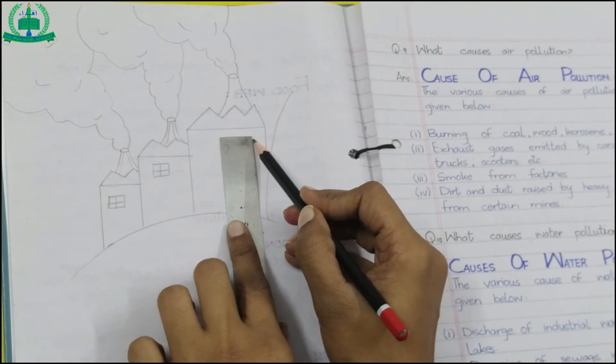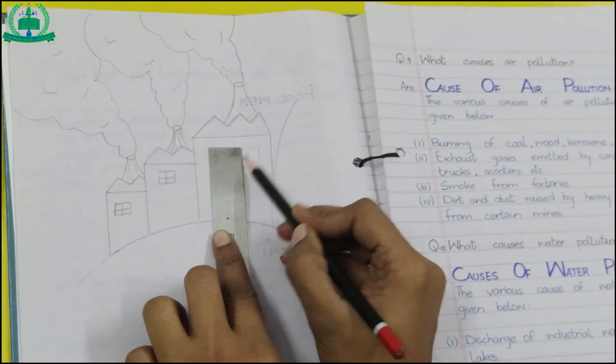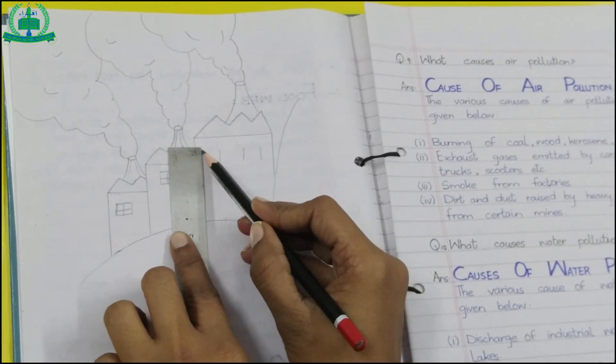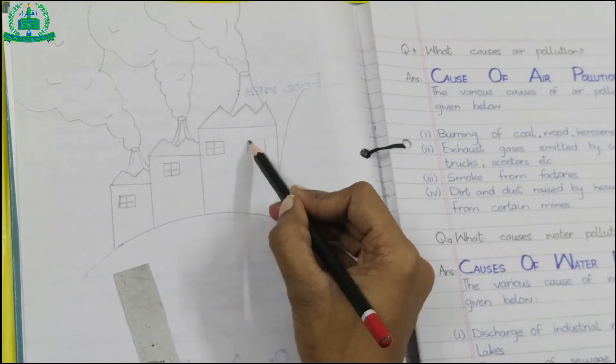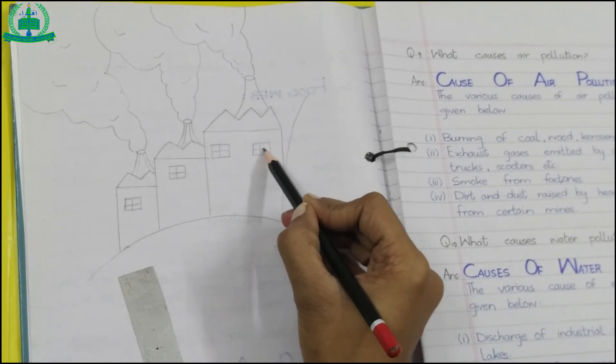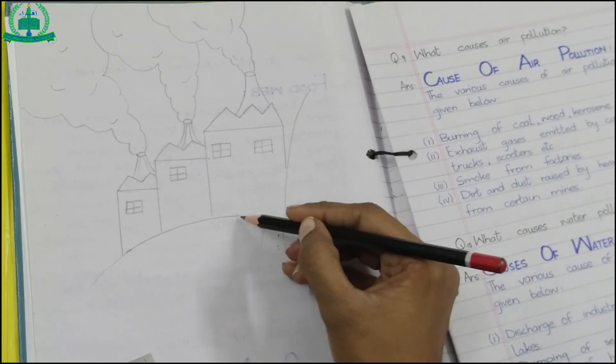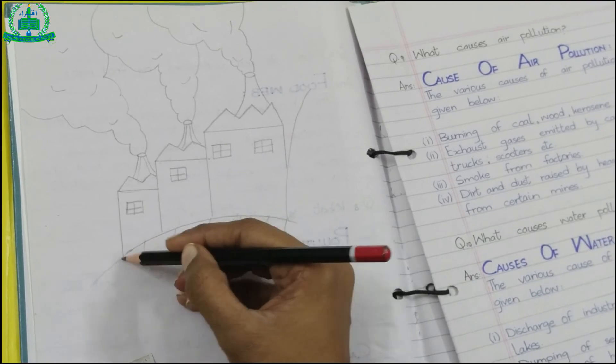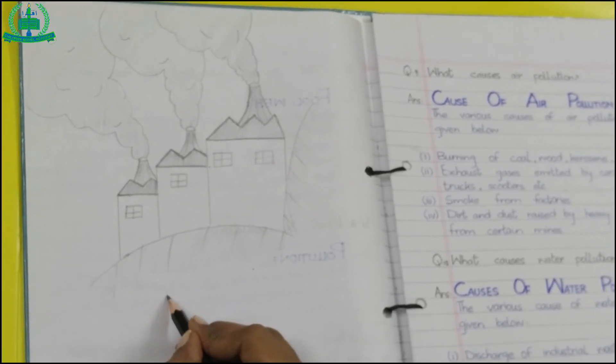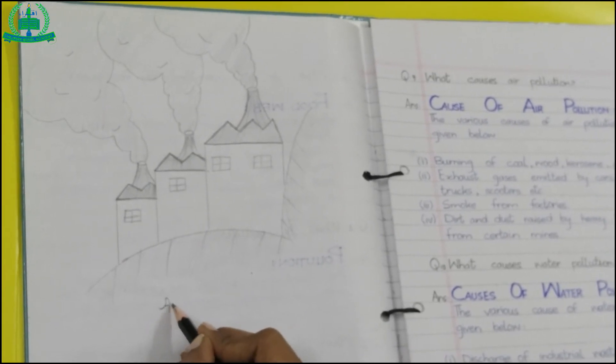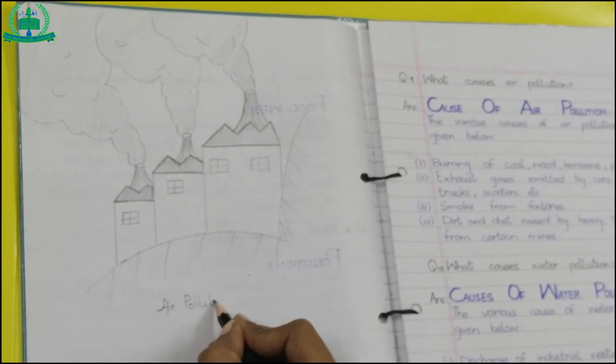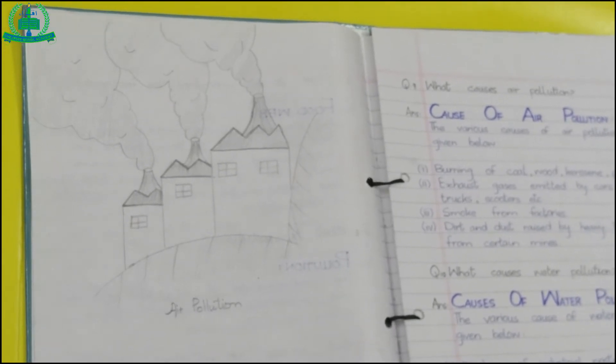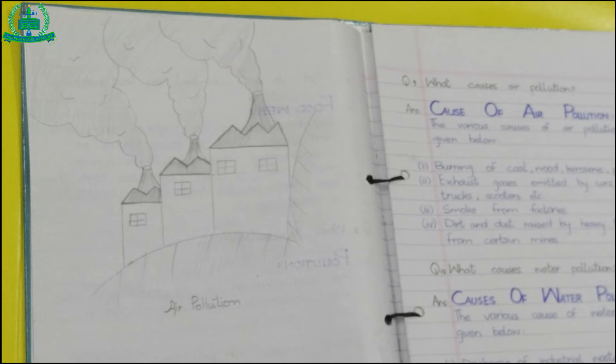Then draw a square box like a window. In this drawing, we can see the smoke coming out from the chimneys of the factories causing air pollution.